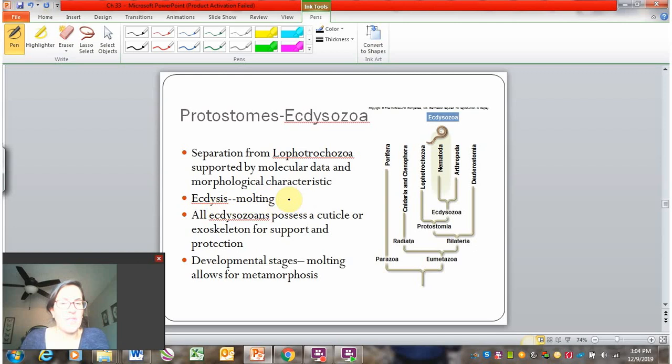So all Ecdysozoans possess an outer coating called either a cuticle or an exoskeleton that provides support to their body, which is soft on the inside of that cuticle or exoskeleton, as well as protection of that soft body. Because of that outer coating, in order to get bigger or to change in their shape, so their developmental stages, they have to shed that outer coating because that outer coating is rigid. So these developmental stages where they shed or molt are part of what's called metamorphosis, and we'll see that in more detail.